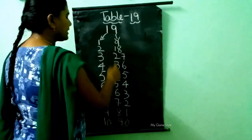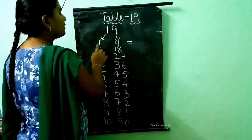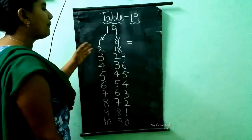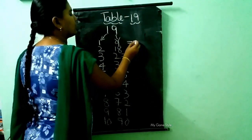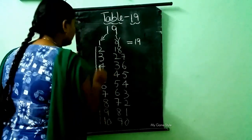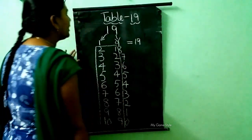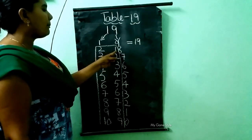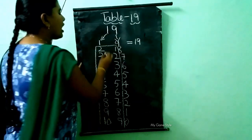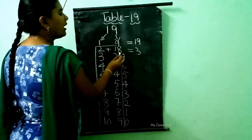This is the 9 table, children. So we need to write these two numbers. We will write them combined. 1, 9, 19. Then here we need to add these both numbers. 2 plus 1. How much, children? 3. Then here 8 is there.